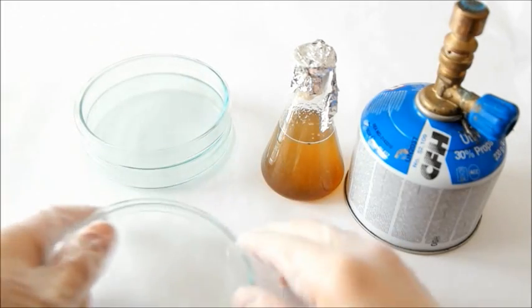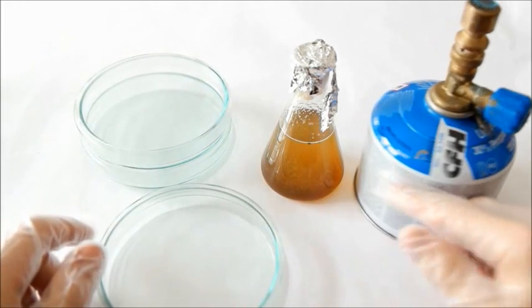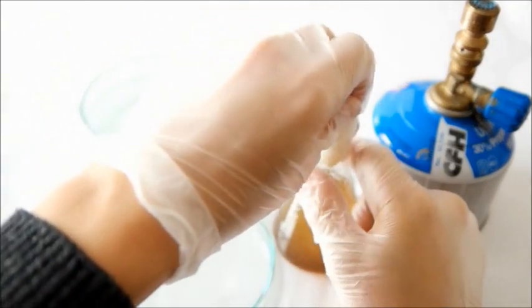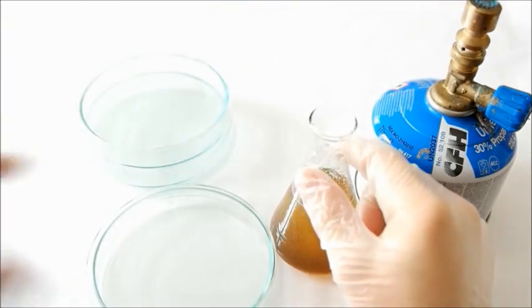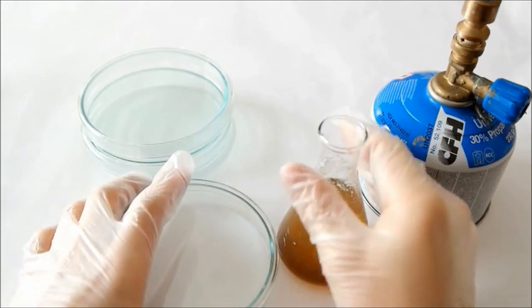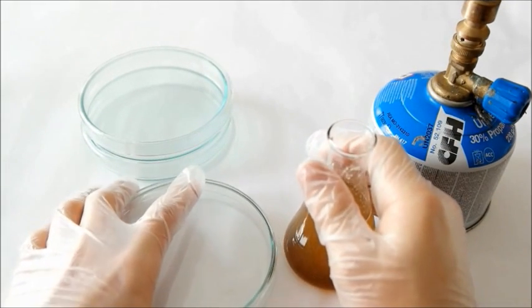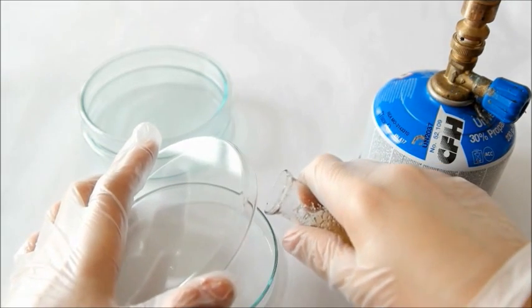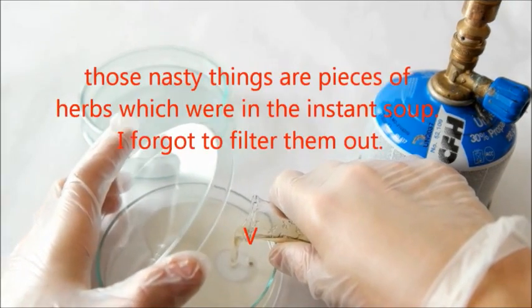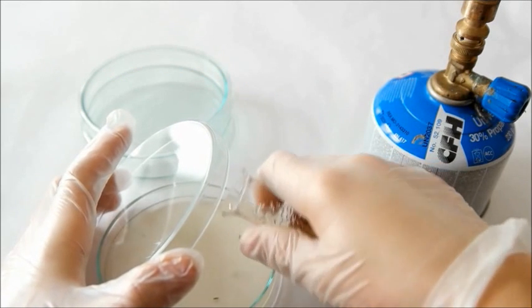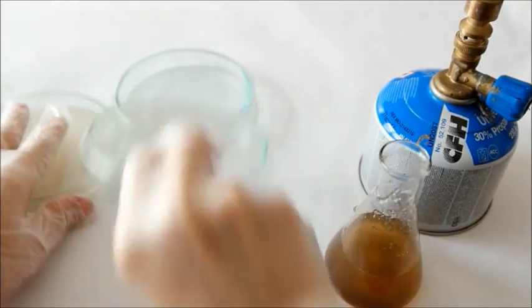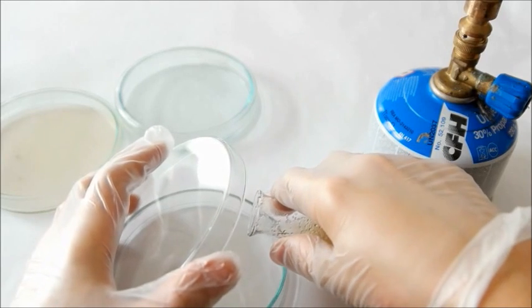So now take one of the sterilized petri dishes, open your flask and take out the cotton ball, and pour it slowly in your petri dishes. Make sure not to open it too much so that no bacteria can enter. That's double safety. And now we can pour the solution in the dish and do this with all of them.